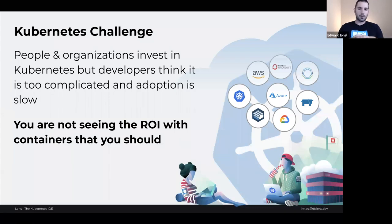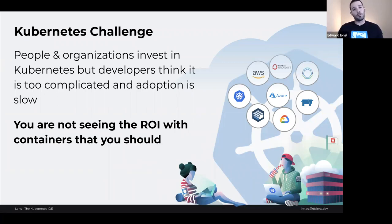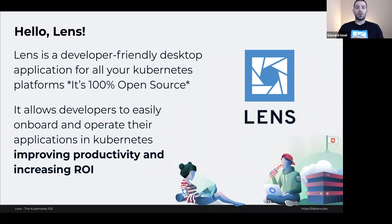Kubernetes is quite challenging. Whether you're a novice or an expert, we all know that Kubernetes is challenging. Organizations and individuals invest a lot of time, resources, and money into Kubernetes, but many developers think it's quite complicated, and adoption within organizations is generally quite slow. This will translate into not seeing the best return on investment for your container initiatives, and this is actually where Lens comes in. Lens is a 100% open-source desktop application for all of your Kubernetes needs. It works with any certified Kubernetes distribution and allows developers, operators, and site reliability engineers to easily onboard their applications directly into Kubernetes, improving productivity and increasing your return on investment.